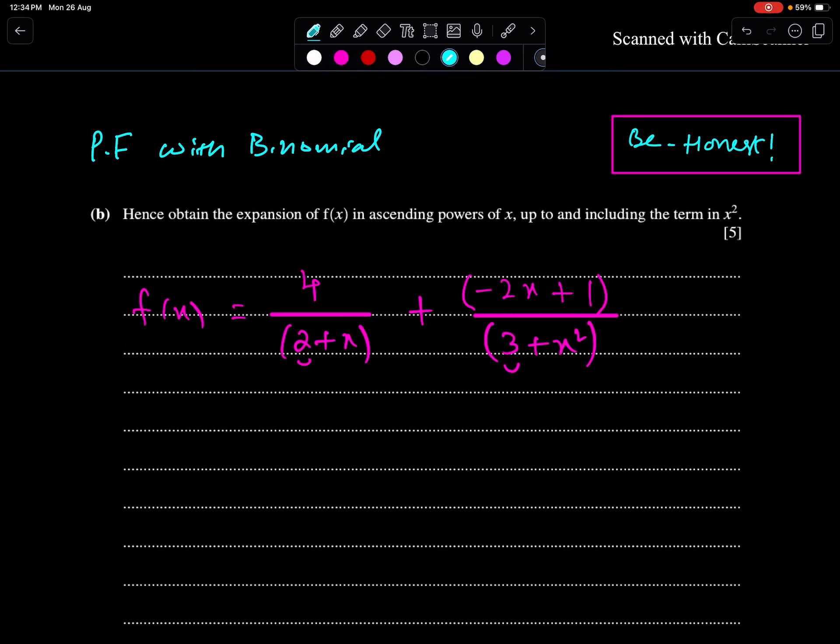First, we have to make the first terms of these two expansions one. So, 4 upon 2, 1 plus x upon 2. This is 1 minus 2x upon 3, 1 plus x square upon 3.